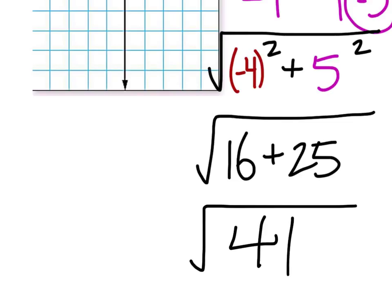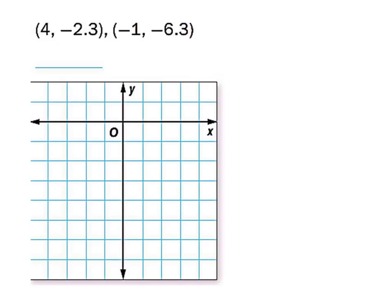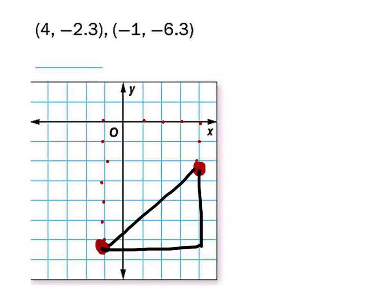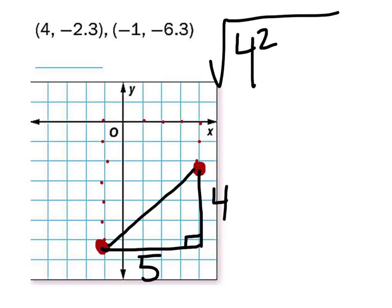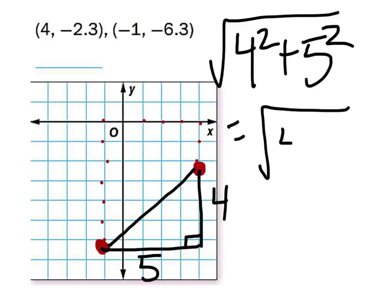Again, you can find the decimal value of that. The book should tell you if you need to round to the nearest tenth or keep it in square root form. We could also graph these points. Plotting them and connecting the two points, we form a right triangle. The change in y's is 4, the change in x is 5, and taking the square root of 4 squared plus 5 squared gives us the square root of 41 once again. So the distance is the square root of 41.